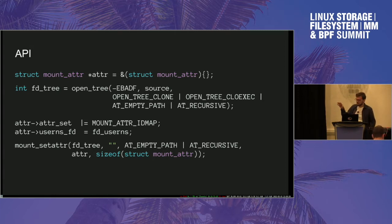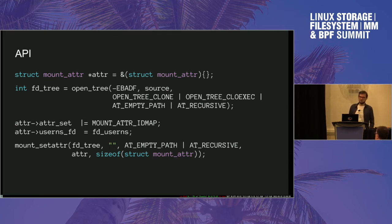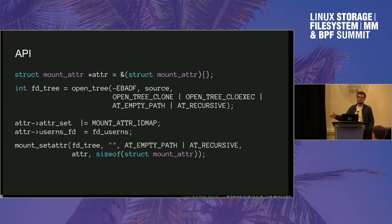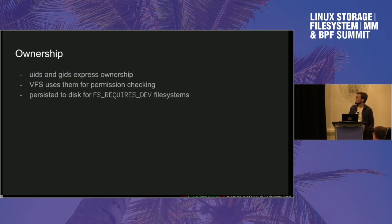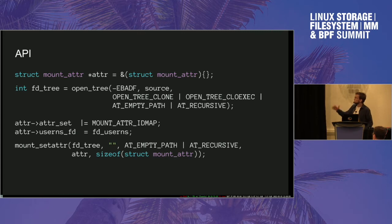This is the API. It allows you to change mount attributes recursively, which something the old mount system call didn't allow. You can make mounts read-only, nodev, and so on. The specific API you need to use to create an ID map mount is to raise the specific flag and then pass the file descriptor of the user namespace you want to apply to that mount. That's basically the whole magic.